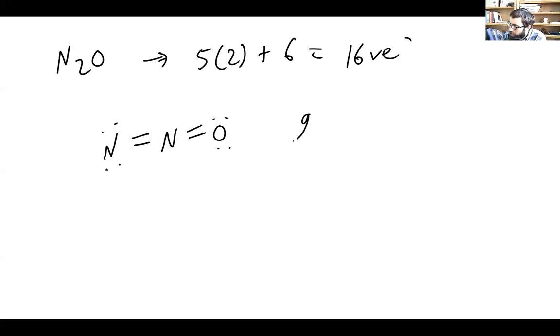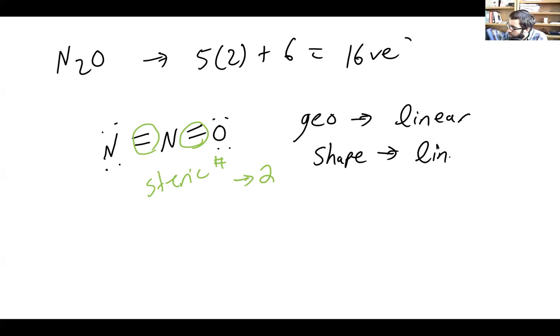Our steric geometry is going to be linear. Why is that? Well, we have a steric number of two—one bonding site, two bonding sites, steric number two, no lone pairs. Our shape—there's no lone pairs again, so shape is the same as the geometry. No lone pairs on the central atom, shape is going to be linear. And bond angle for any line is going to be exactly 180 degrees.